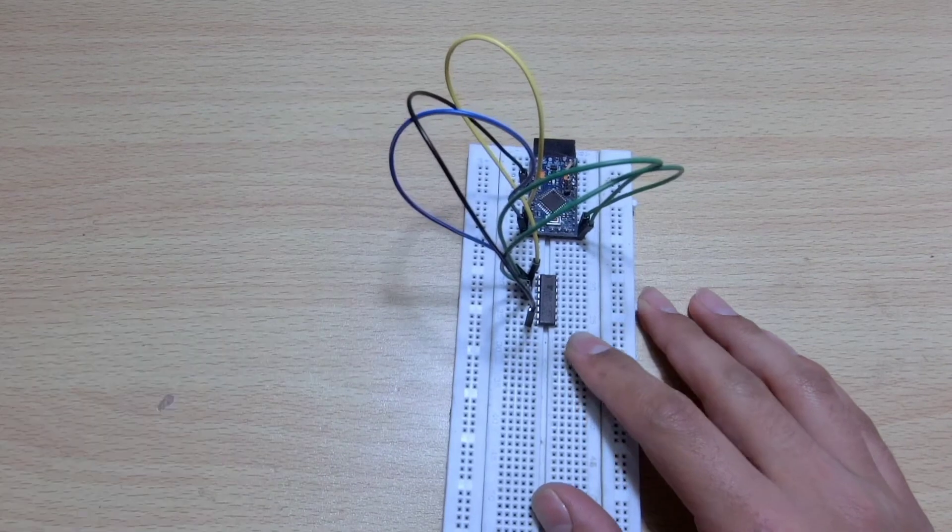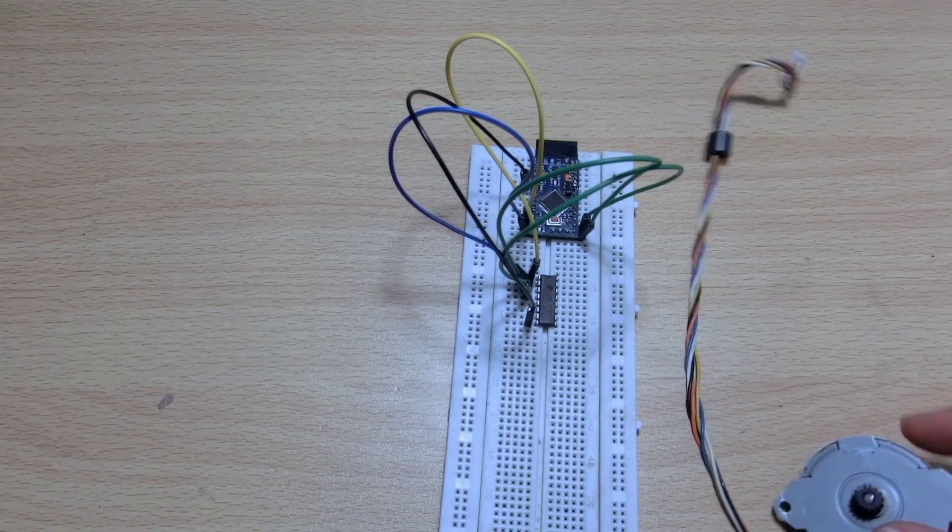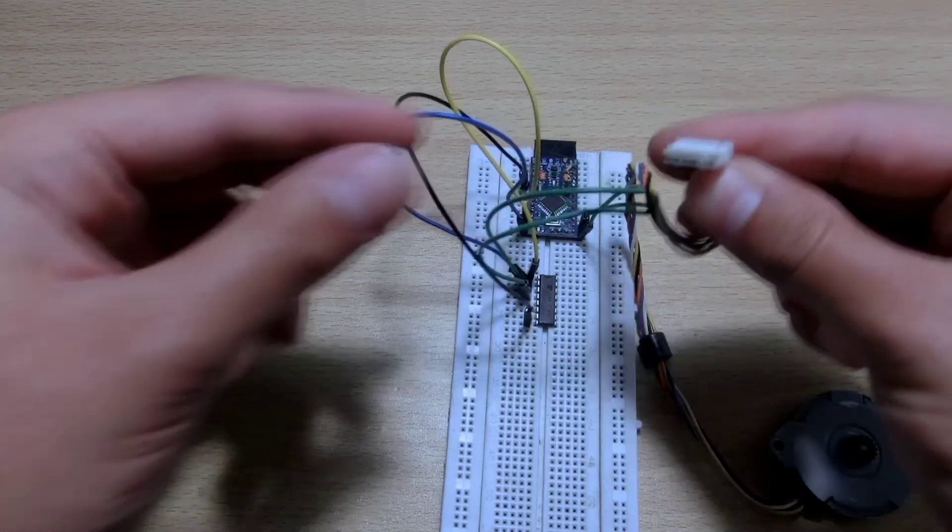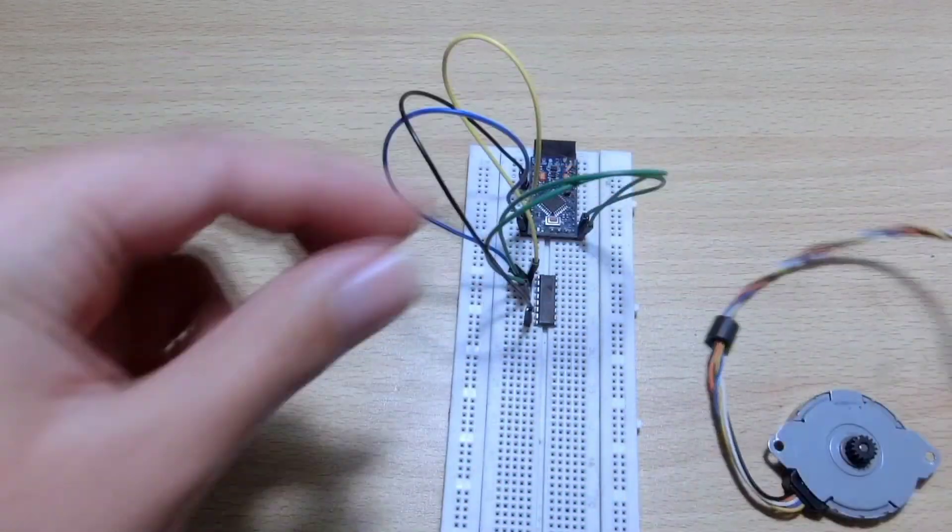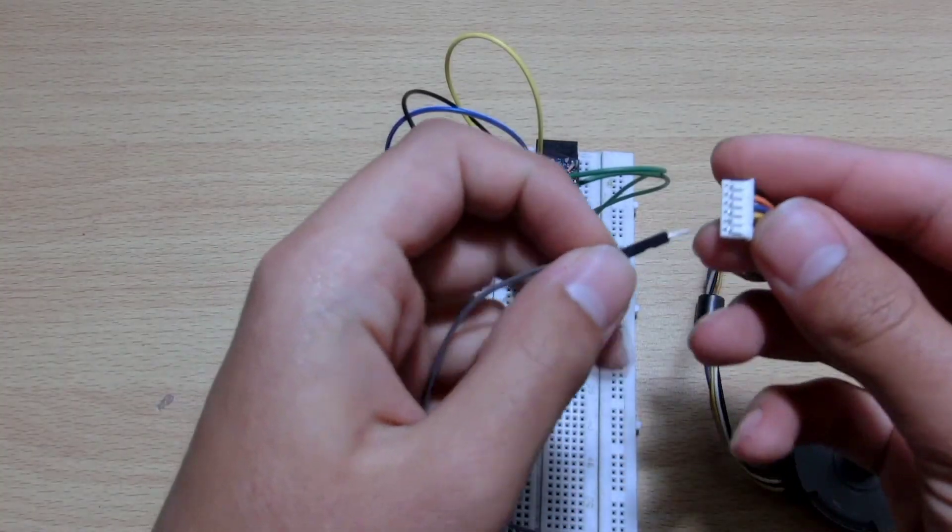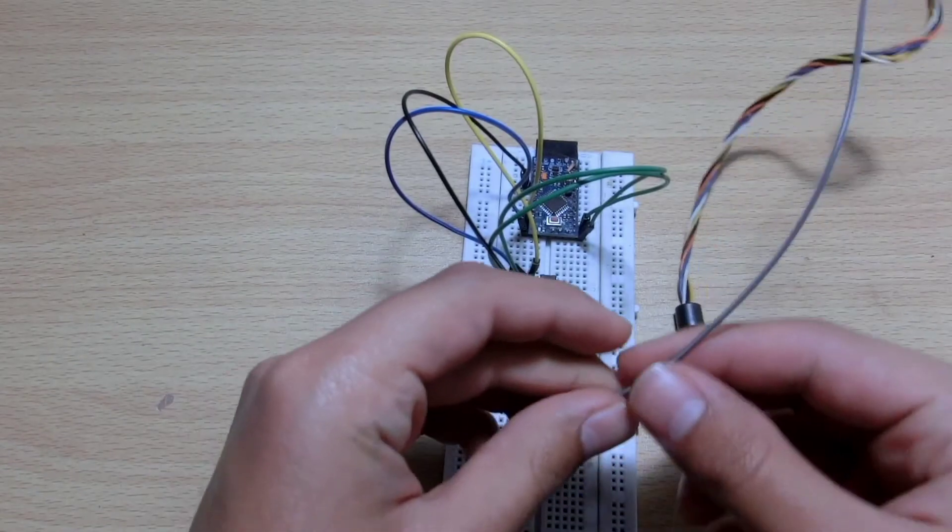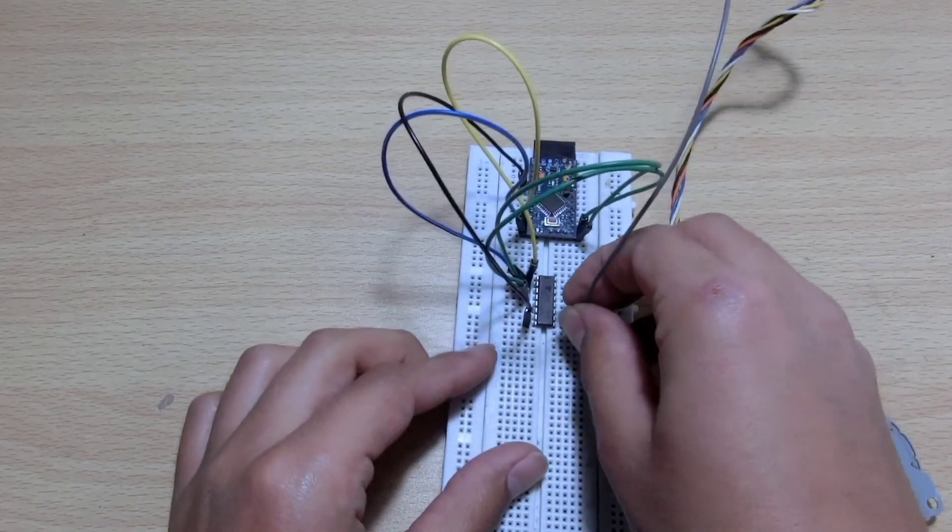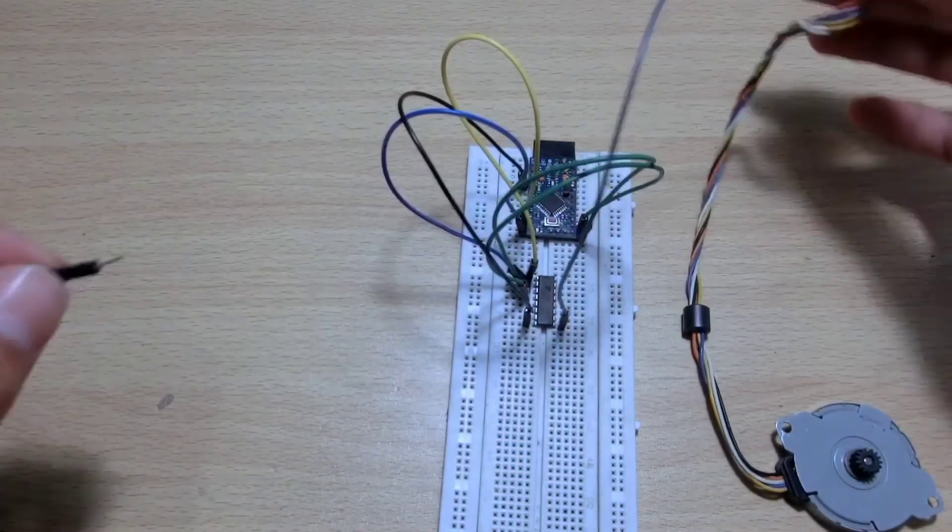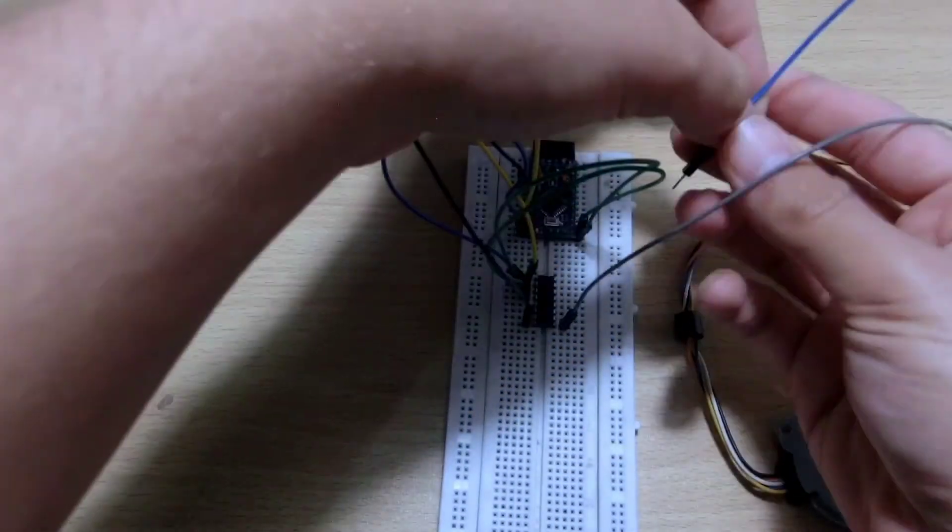Take 5 jumper cables and attach common wire of motor to positive of IC. My motor conveniently has a connector. If yours does not have a connector, you will have to manually connect the jumper wires. Connect A1 of coil A to OUT1 of IC, A2 of coil A to OUT2 of IC, B1 of coil B to OUT3 of IC, B2 of coil B to OUT4 of IC.